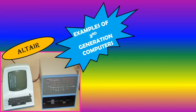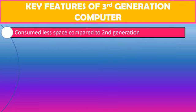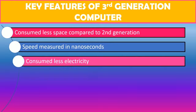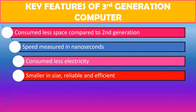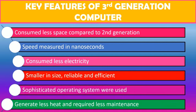Some examples of third generation computers are ALTAIR and APPLE 1. You can see the size is now reducing — as the generations move forward, the size of the computers is reducing. Key features of third generation computers: they consumed less space compared to second generation; speed was measured in nanoseconds; consumed less electricity; size is smaller; they are reliable and efficient; sophisticated operating systems were used; less heat was generated; and these computers required less maintenance.